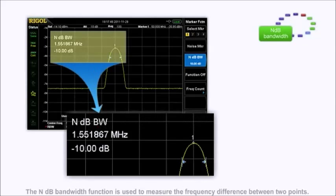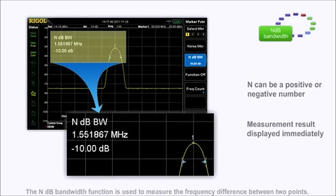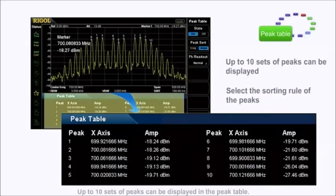The NdB bandwidth function is used to measure the frequency difference between two points. This can be shown using the convenient marker function of the instrument. Up to 10 sets of peaks can be displayed in the peak table. Users can select the sorting rule of the peaks and save the measurement results.